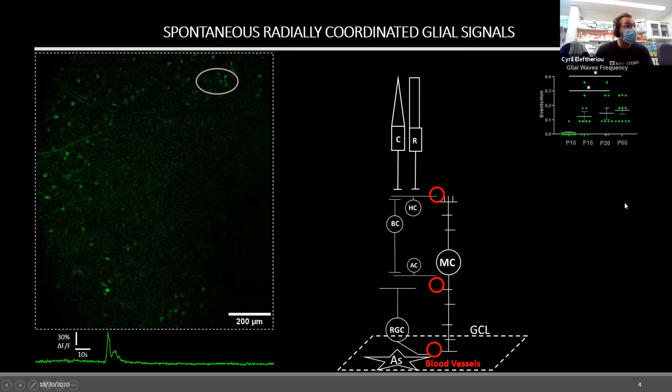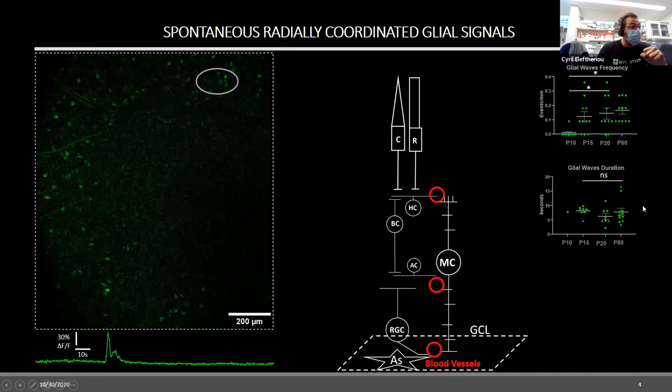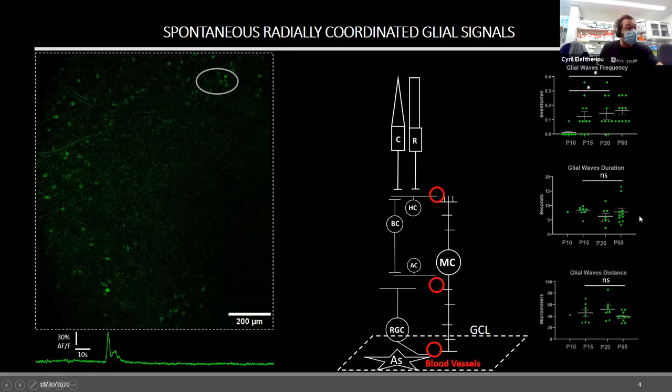And what I found is that the frequency of these spontaneous events really increases significantly after eye opening. So at P10 there's almost none of these, but at P15, 20, and 60 you get a lot more. And the duration of these events seems to be always the same, or similar in the same ballpark, same as the distance traveled by these clusters of glia.